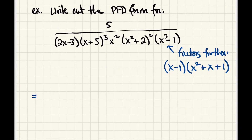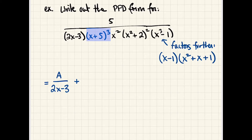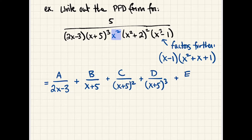Now let's write out the form. The first factor is linear with multiplicity 1 — simplest case — so just A over that factor. The next factor is linear with multiplicity 3, so we need three terms: B over (x plus 5), C over (x plus 5) squared, and D over (x plus 5) cubed. The x squared factor is an irreducible linear factor with multiplicity 2, so it gets a single letter in each numerator: E over x plus F over x squared.